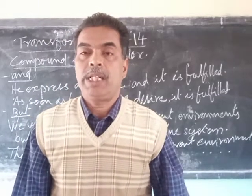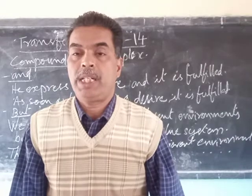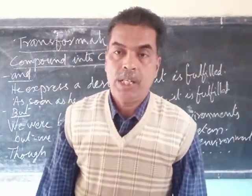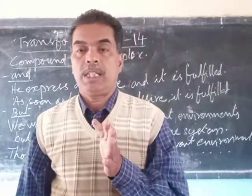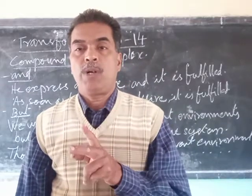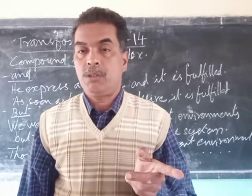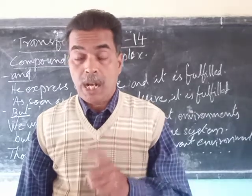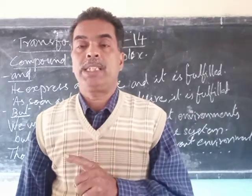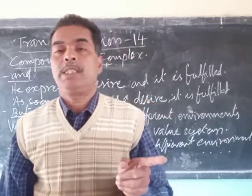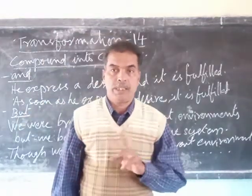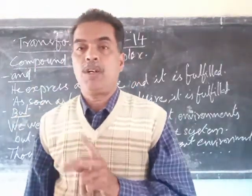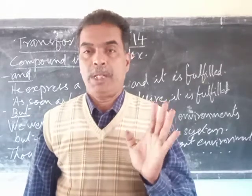We studied about two types of conjunctions: coordinating conjunctions and subordinating conjunctions. The structural change is that one coordinate clause has to be made into a subordinate clause from the compound sentence, and accordingly the coordinating conjunction also changes into a subordinating conjunction. This is the structural change that takes place when we change a compound sentence into a complex sentence.